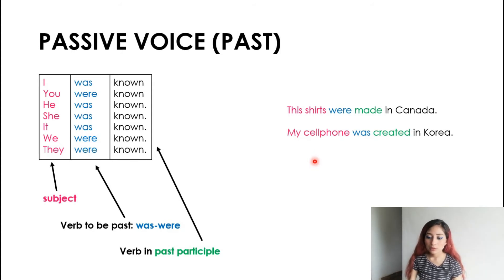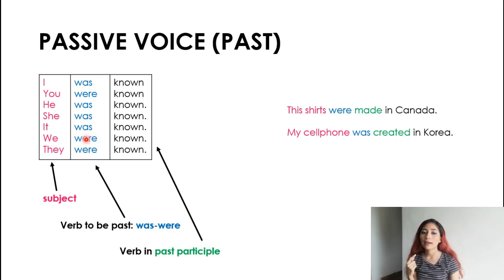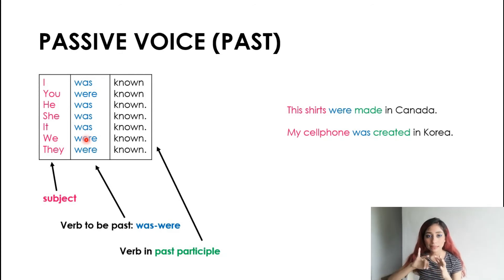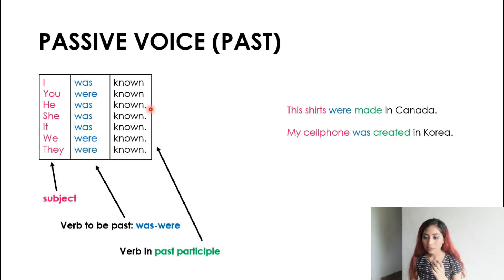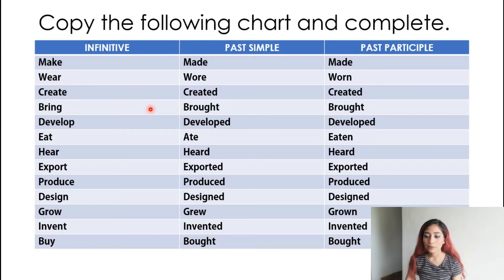Passive voice in past: we start with the subject and then add the verb 'to be' in past. Remember that the verb 'to be' in present has three forms — am, is, or are — but in past we have only two forms: was and were. Then we have the past participle verb. For example: 'I was known,' 'you were known.' Negative: 'I wasn't known,' 'you weren't known.' Examples: 'These shirts were made in Canada.' 'My cell phone was created in Korea.' Keep studying your verbs.